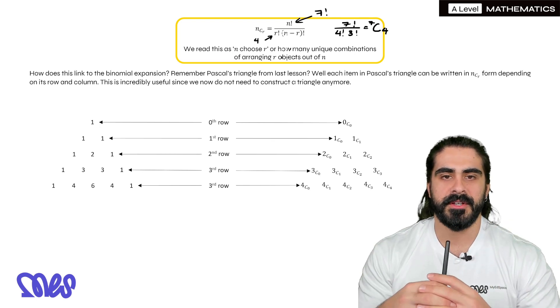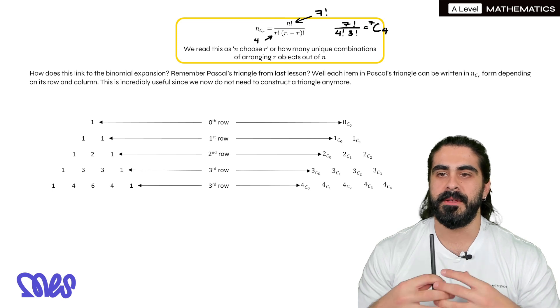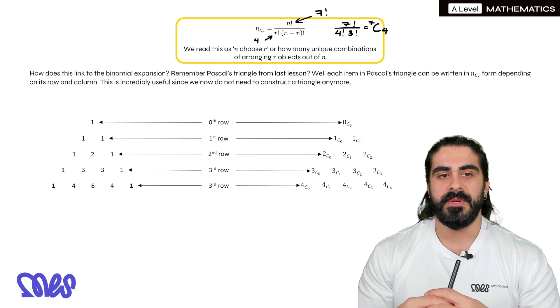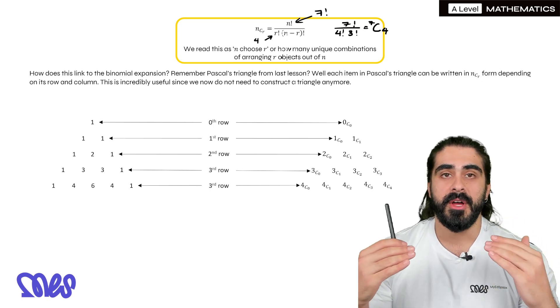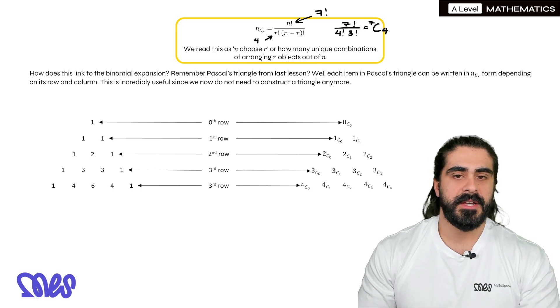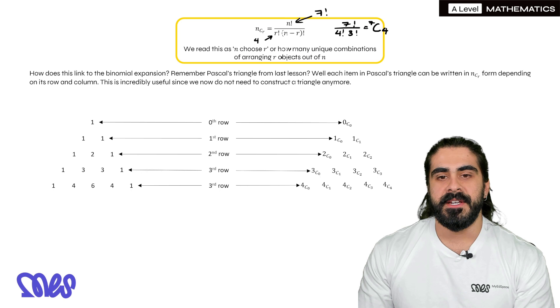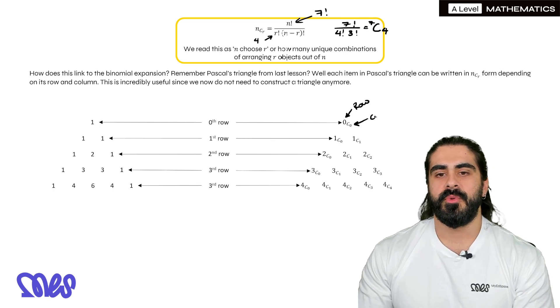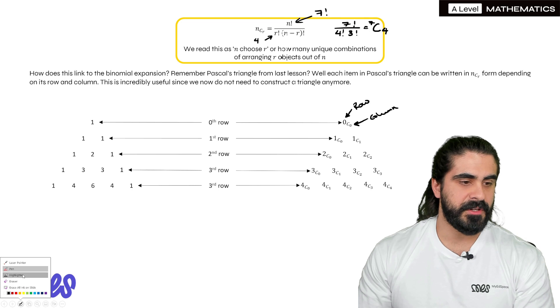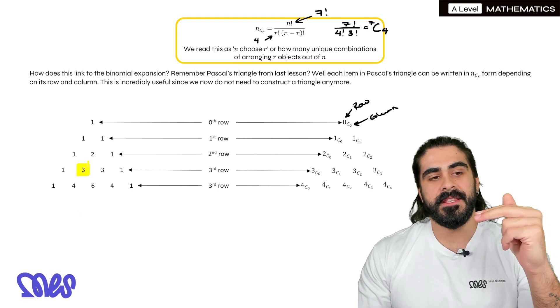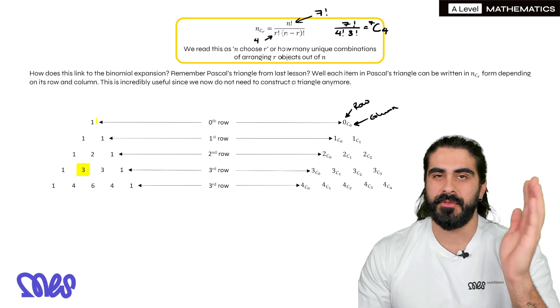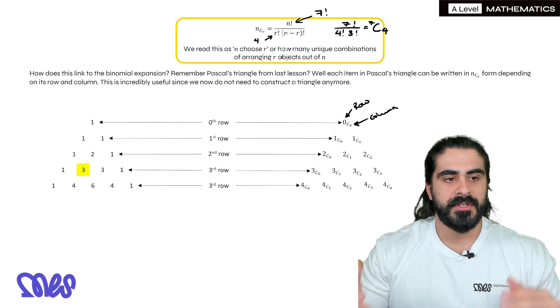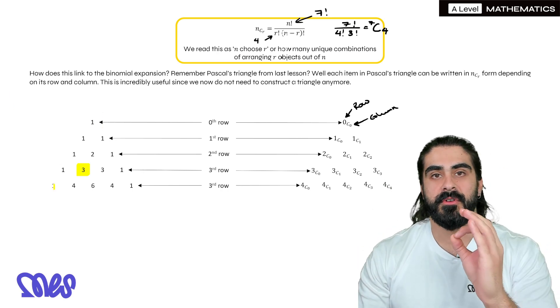Now how does this link to the binomial expansion? Remember Pascal's triangle from last lesson? Well each item in Pascal's triangle can be written in the form of n choose r depending on its row and column. This is incredibly useful since we now do not need to construct the triangle anymore. And we don't even need to remember what is in each row because the calculator can compute this for us. So if you look at the zeroth row, we have zero choose zero. So this top number tells you which row you're in, and the bottom number tells you what column you're in.